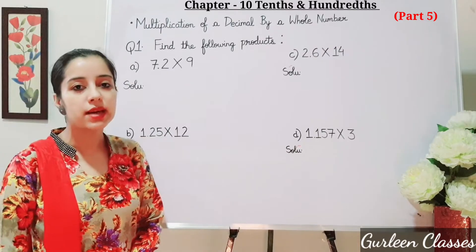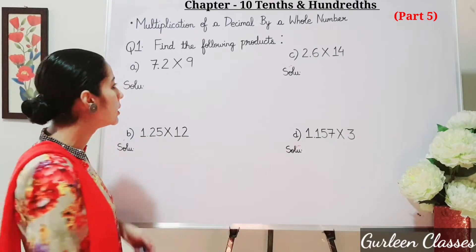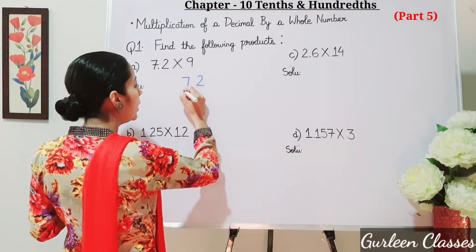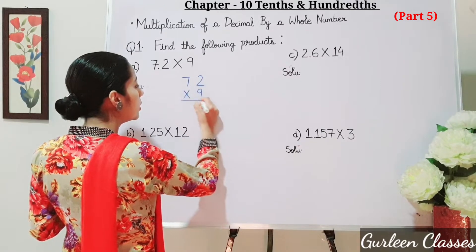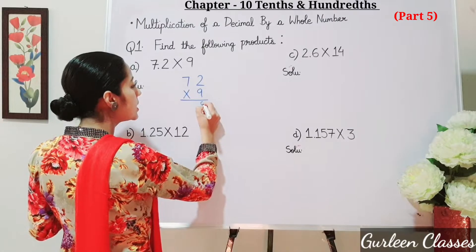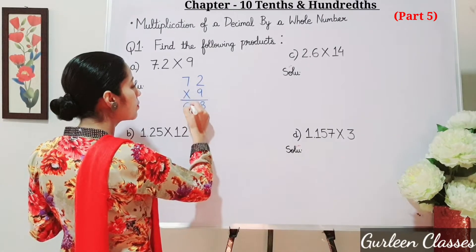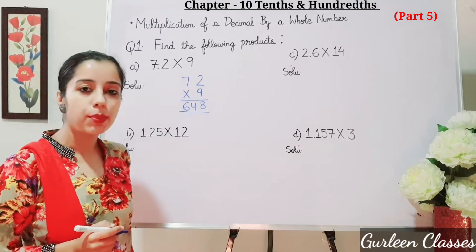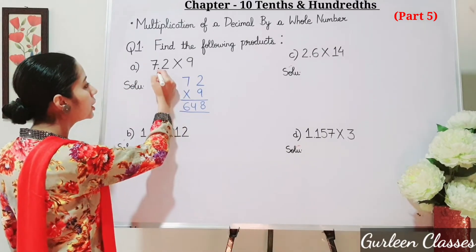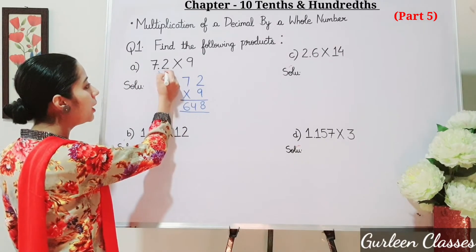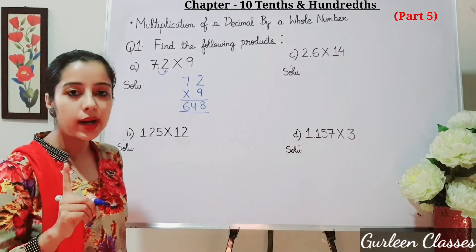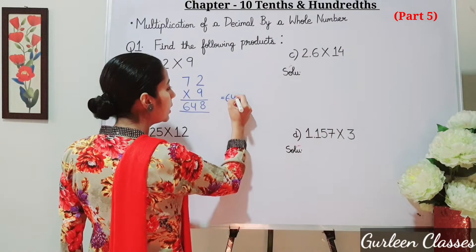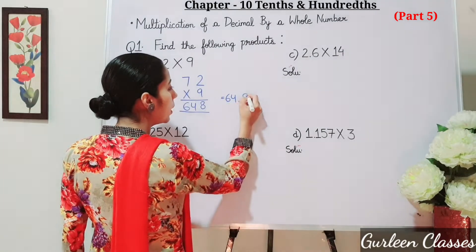So let us multiply 72 into 9. 9 twos are 18, 7 nines are 63 plus 1 is 64. So now we will place the decimal point. Just see in the question, after the decimal point, how many digits are there? Only 1 digit. So from the right, we will place 1 decimal point. So the answer is 64.8.